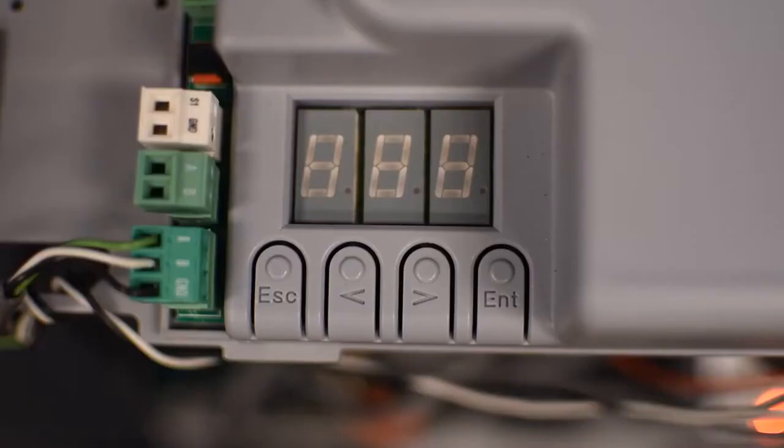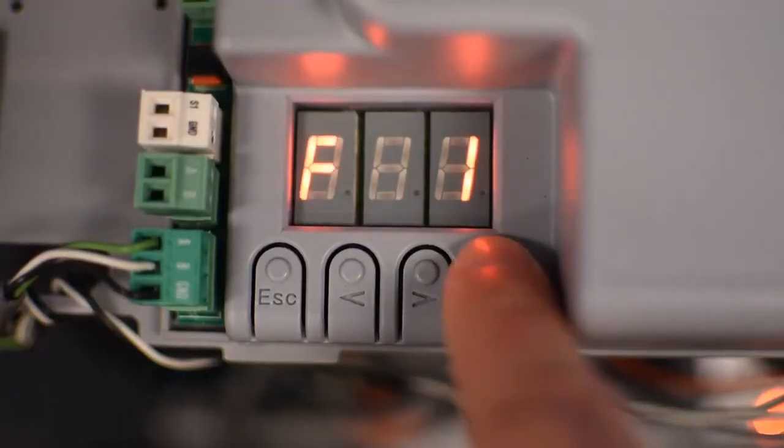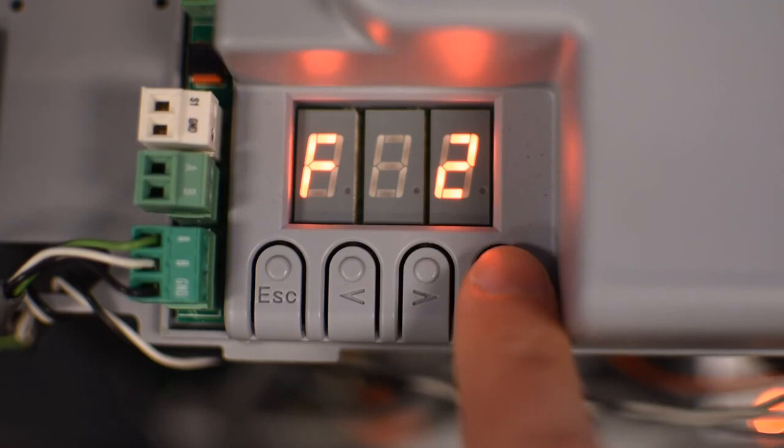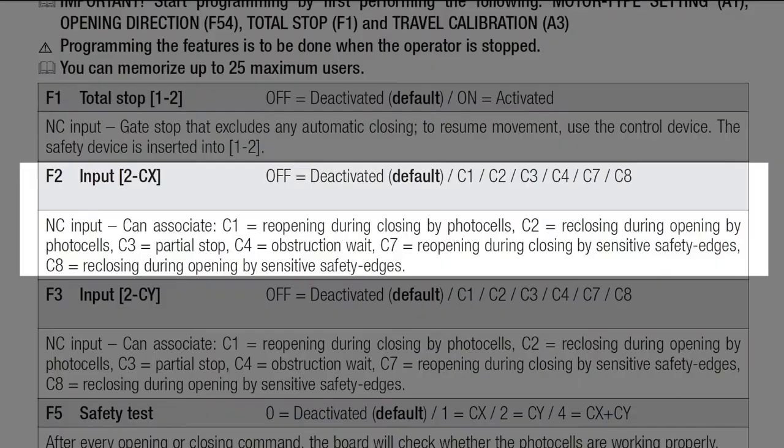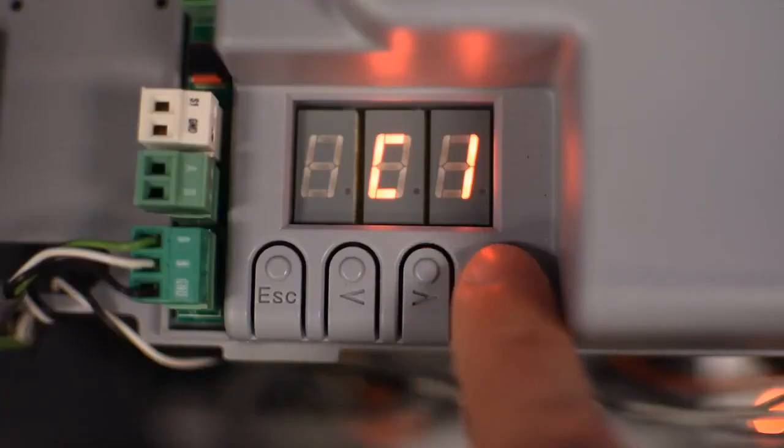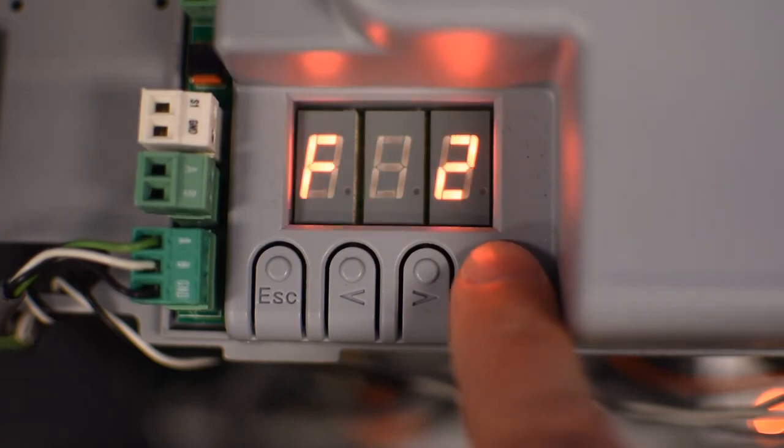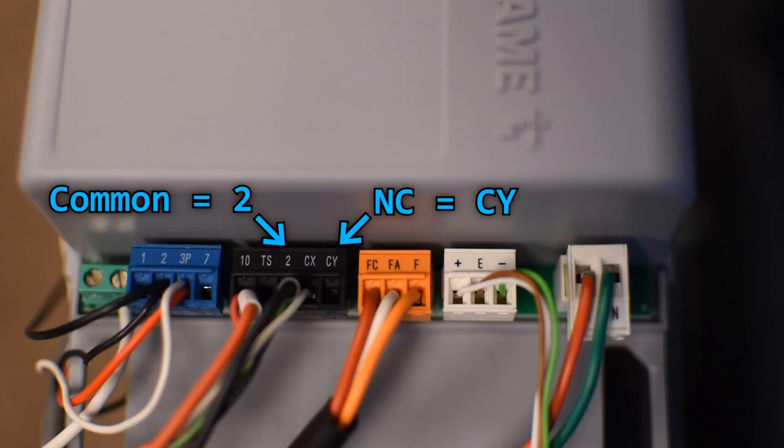To enable it, go to F2 and select the corresponding behavior you want to execute when the photo cell detects an obstruction. For example, this photo cell is in the path of the driveway, so I'm going to select C1 so that it will reopen the gate while closing. You can connect another safety device in CY and assign the function in F3.